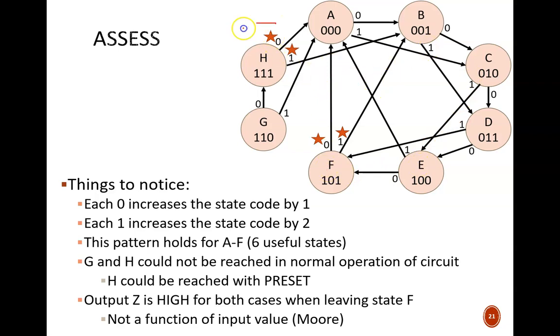Meanwhile, nodes G and H are off on their own island. Since there is no arrow pointing to them, they could not be reached during normal operation of the circuit. As a side note, with asynchronous preset, we could force the circuit to go to state H, but then it would jump back to A or B on the next clock edge. Overall, there appear to be six useful states. We will often run into this situation where there are unused state codes, simply because our memory capability is a little larger than what we need.